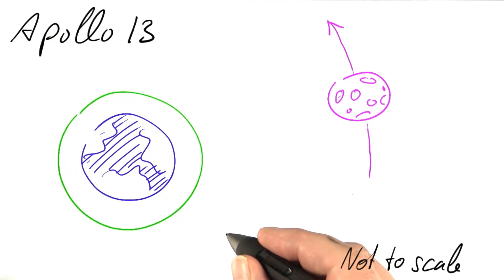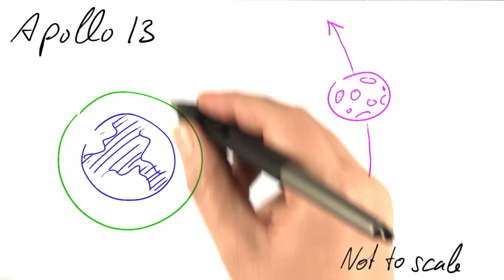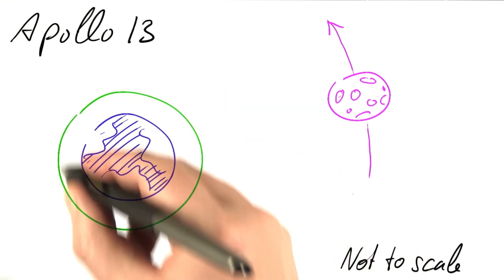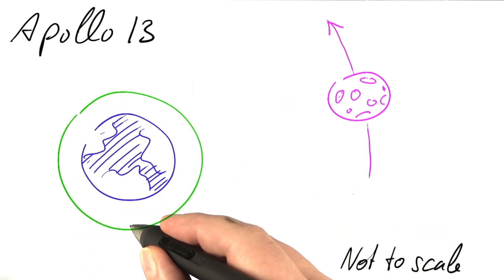Now let's take a closer look at what happened with Apollo 13. The rocket is already in a parking orbit around Earth to take us to the Moon.